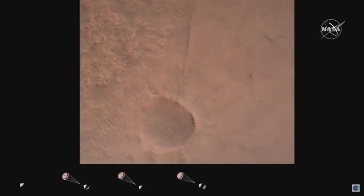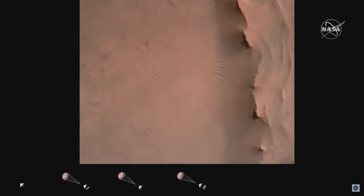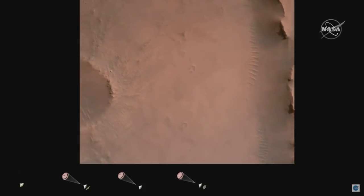Back shell set. Current velocity is 83 meters per second at about 2.6 kilometers from the surface of Mars. We have confirmation that the back shell has separated.